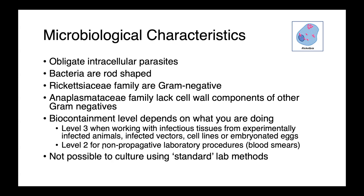They're considered level 2 for non-propagative laboratory procedures — things like making blood smears or PCR — but level 3 when working with infectious tissues from experimentally infected animals, the vectors, or infected cell lines or embryonated eggs. Because these are obligate intracellular parasites, it's not possible to culture them using standard laboratory methods. They won't grow on petri dishes.